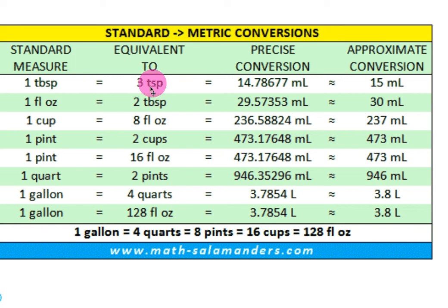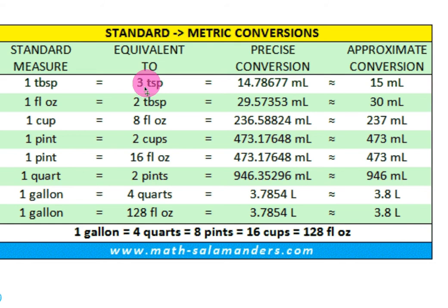A teaspoon is, if you take a spoon out of your drawer, it's going to be about a teaspoon. Every spoon is different — we're talking about the smaller spoons like you would use to eat a bowl of cereal. So there are three teaspoons in a tablespoon. A tablespoon is one of the bigger spoons — you would use it more like if you're cooking or scooping mashed potatoes out of a pot.